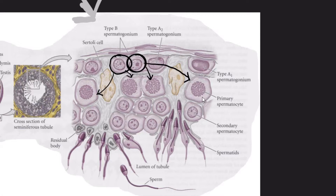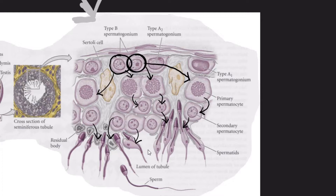The primary spermatocytes will divide twice by meiosis to form secondary spermatocytes and then spermatids. These spermatids will then undergo physiological changes in the nucleus, cytoplasm, and cell organelles — including the Golgi apparatus and mitochondria — to become fully mature spermatozoa.